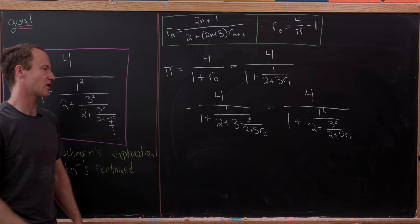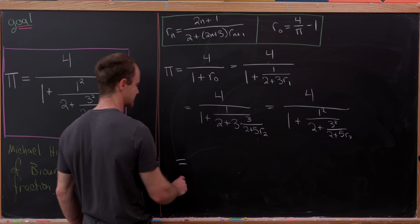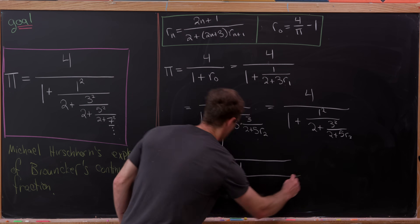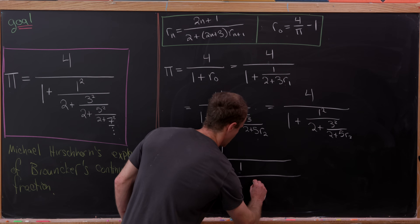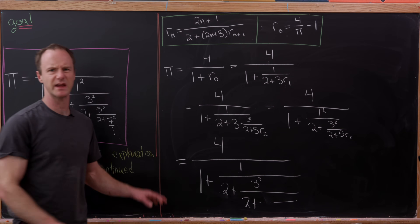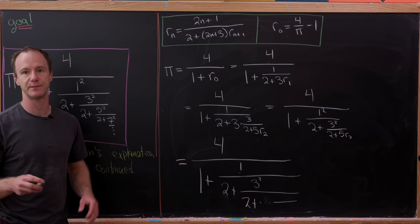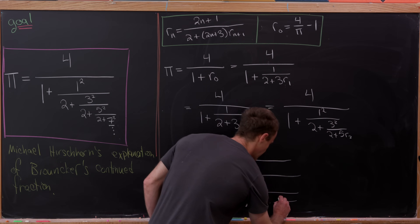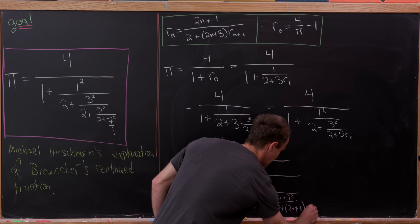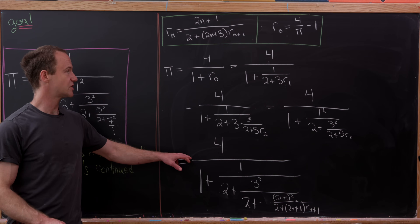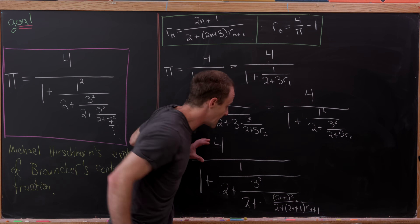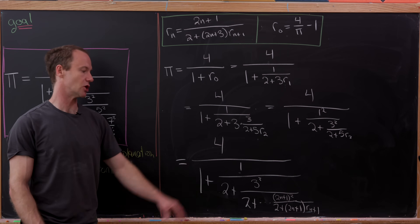Continuing this process on and on gives 4 over 1 plus 1 over 2 plus 3 squared over 2 plus dot dot dot, with after n terms the tail being 2n+1 squared over 2 plus 2n+1 times r_(n+1). To go from here to the full continued fraction we simply take the limit as n goes to infinity, pushing that remainder infinitely in the lower-right direction.